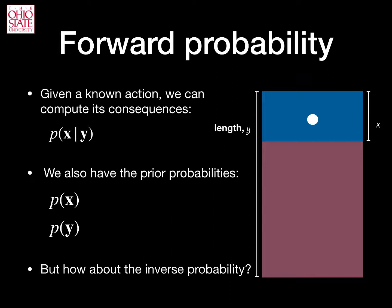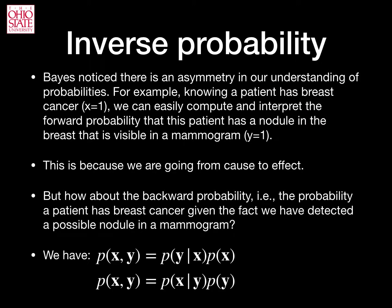But now consider the complications associated with the inverse problem. x is given, or observed, and we wish to estimate y. That is, what is the probability that y is of a certain hypothesized length? How can we solve this problem? Bayes' insight was to notice that the joint probability, p of x and y, is equal to either the probability of y given x times the prior probability of x, or the probability of x given y times the probability of y.